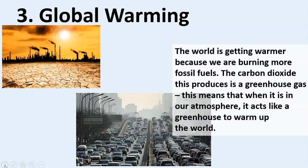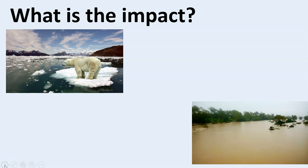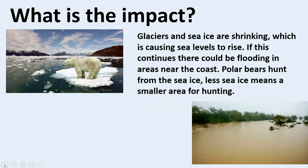Now this is a biggie — global warming. The world is getting warmer because we're burning more and more fossil fuels, and carbon dioxide is produced. That's called a greenhouse gas, and it means that when it is in our atmosphere it acts like a greenhouse and it warms up the world. And what is the impact? See that polar bear just sitting on that tiny little bit of ice? That's not normal. Some of you would have watched the video as well.